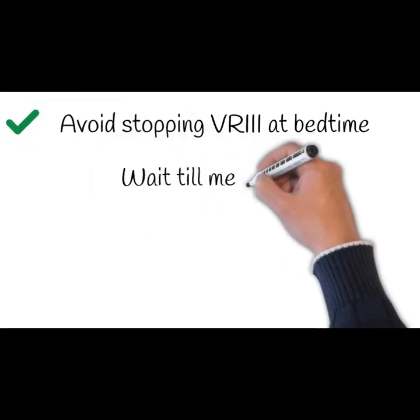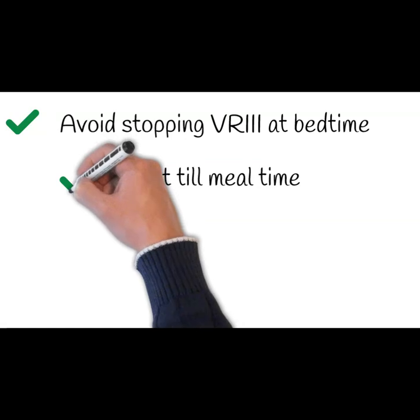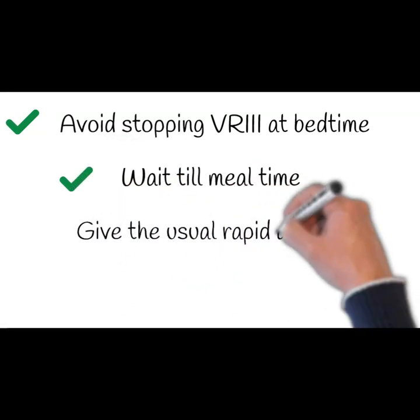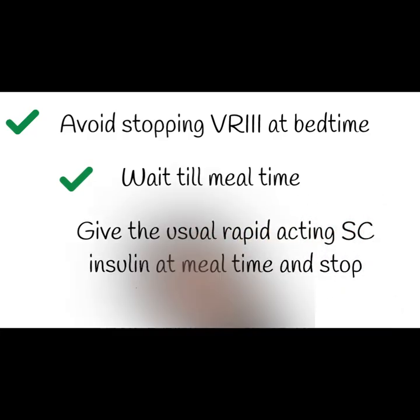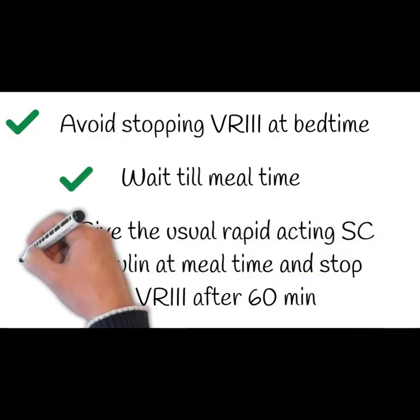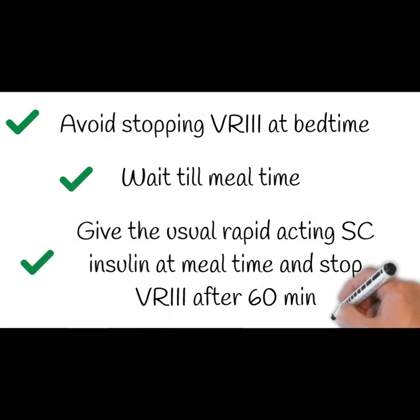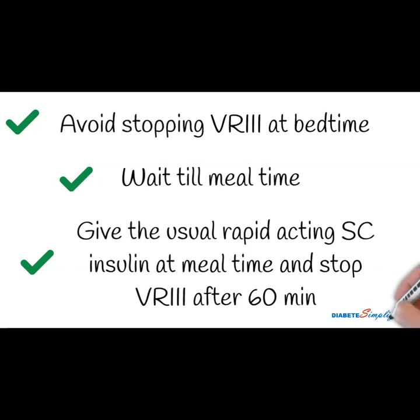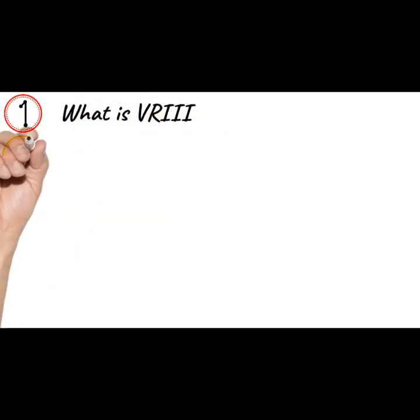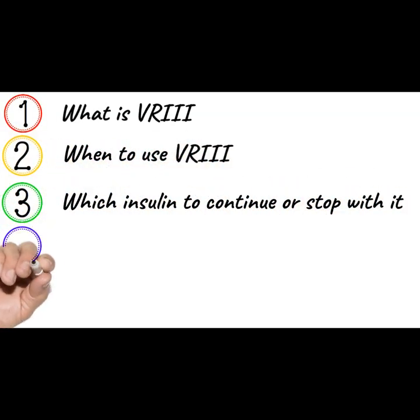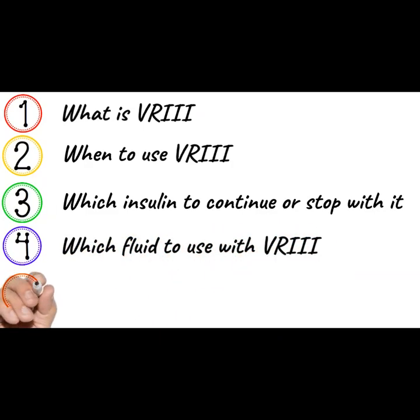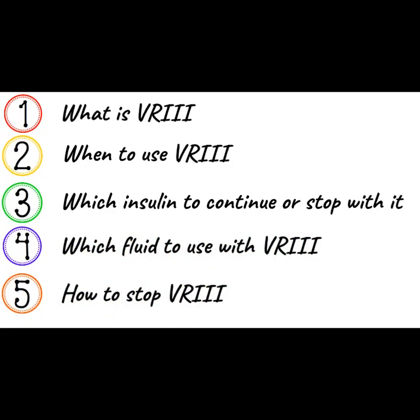When they're ready, just follow three simple principles: avoid stopping variable rate IV insulin overnight because of the risk of a lengthy period of fasting; wait till a mealtime; give them their usual rapid-acting insulin before the meal; and stop the variable rate IV insulin after 60 minutes. This concludes the five-step illustration about variable rate IV insulin.